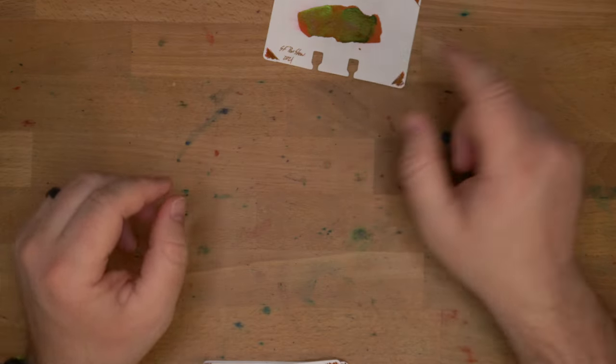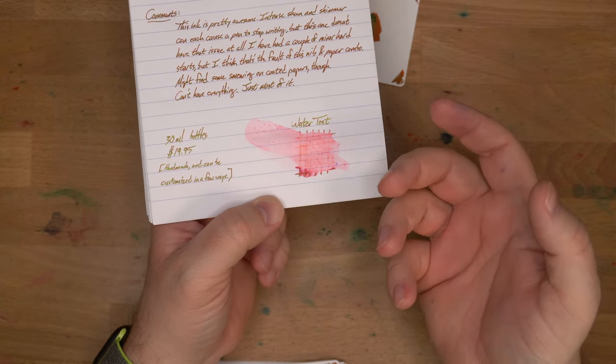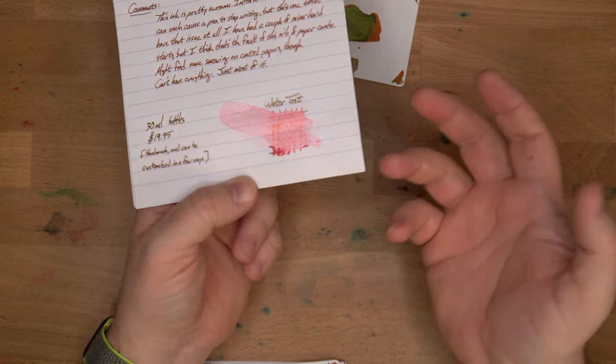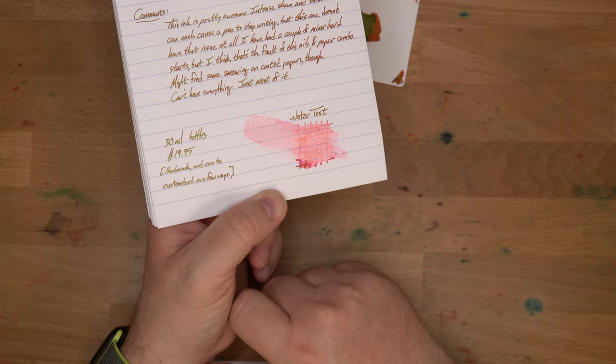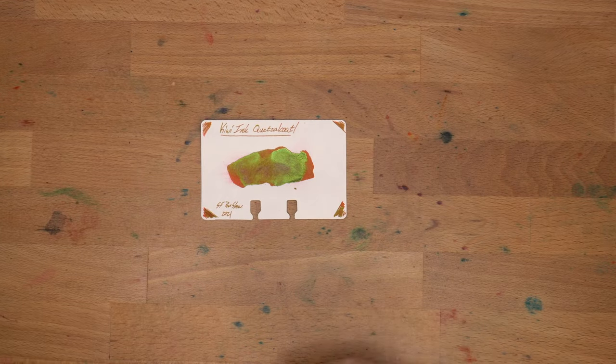And I should say that these inks are all handmade by Kiwi Ink. And so, you can have them customized in a bunch of different ways, in terms of wetness and I think shimmer density and sheen, all kinds of things for that 20 bucks and that 30ml bottle. So, go check out their site. You can sort of customize your ink that way. Alright, so, there's Quetzalcoatl.